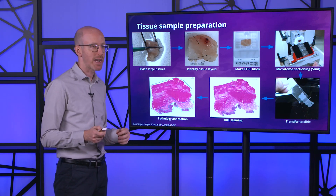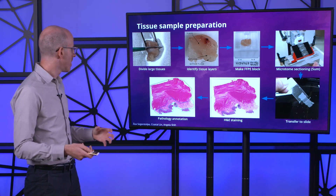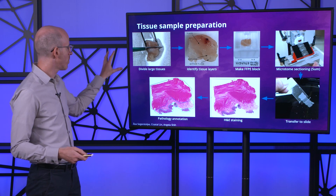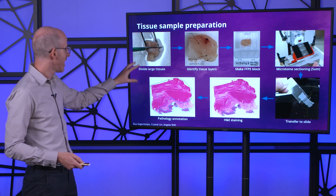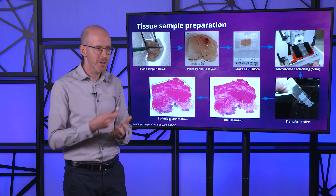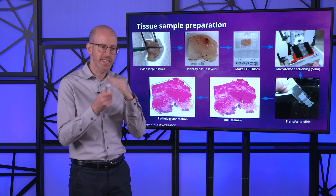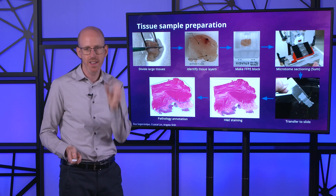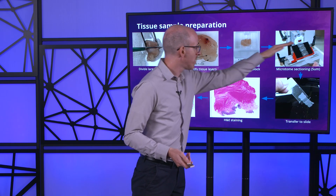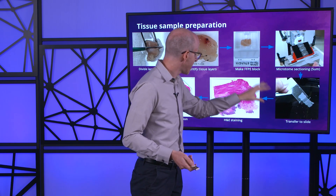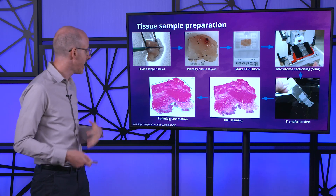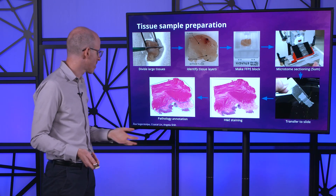Here is the tissue processing pipeline that each sample went through, work done at the Broad Institute by Ossa Segristopa and Crystal Lynn. They take the colon tissue from the patient, chop it up, and identify the different layers. Then they embed the tissue in paraffin — a rigid wax-like substrate. Once embedded, very thin slices of 5 micron width can be made, which is ideal for microscopy and imaging. These thin paraffin sections are stained with H&E, and pathologist Angela can annotate the image and tell us what's happening from a histopathology perspective.